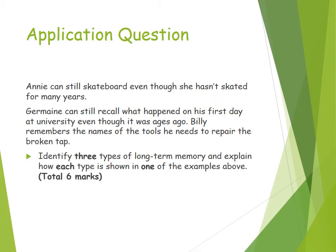You know the three types are episodic, procedural, and semantic. For episodic memory, you would say it involves recalling events that have happened to an individual person — in this situation it would be Jermaine, who can still recall his first day at university.